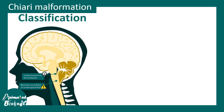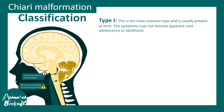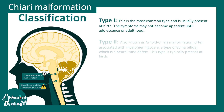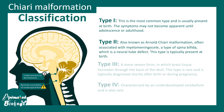There could be different types of Chiari malformation. Type 1 is the most common type and usually presents at the time of birth, so it's congenital. There could be type 2, also known as Arnold-Chiari malformation, and it's often associated with myelomeningocele, which is also a distinct feature in spina bifida. There are other types like type 3 and type 4 which are less common.